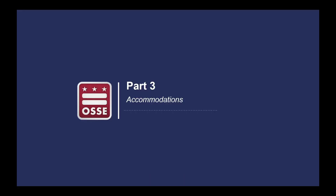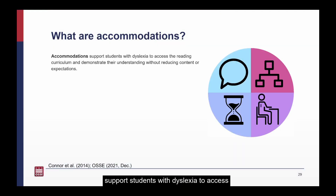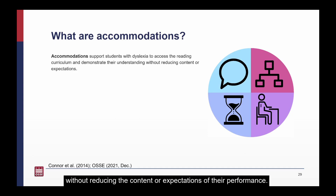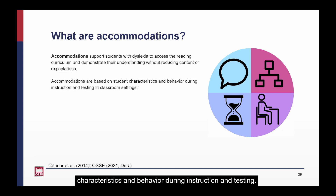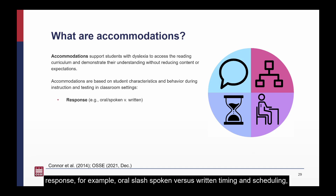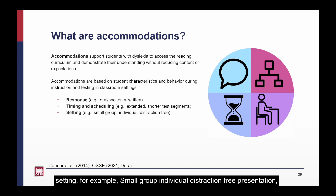Part 3: Accommodations. Accommodations support students with dyslexia to access the reading curriculum and demonstrate their understanding, without reducing the content or expectations of their performance. Accommodations are based on a student's individual characteristics and behavior during instruction and testing in classroom settings. The different types of accommodations for students with dyslexia include: response (for example, oral/spoken versus written); timing and scheduling (for example, extended time, shorter test segments); setting (for example, small group, individual, distraction-free); and presentation (for example, enlarged text, graphic organizer).